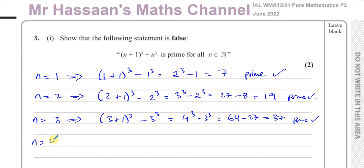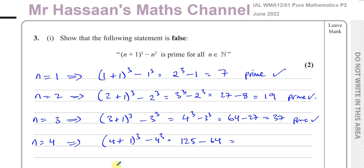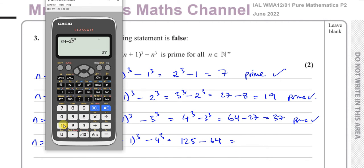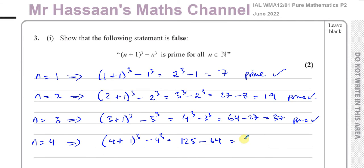When n equals 4, we're going to have (4+1)³ minus 4³, which is 5³ minus 4³, which is 125 minus 64, which gives us 61. 61 is also a prime number — 2, 3, 4, 5, 7 don't go into it.